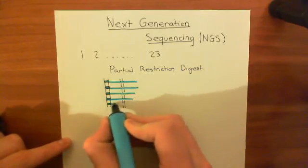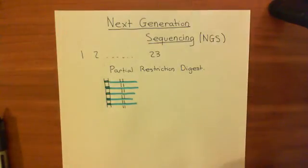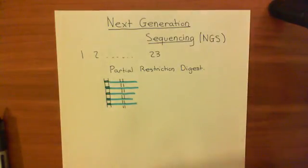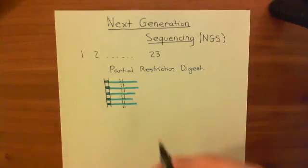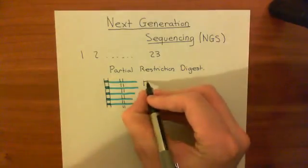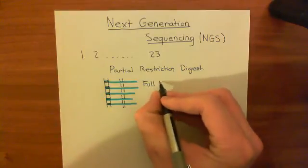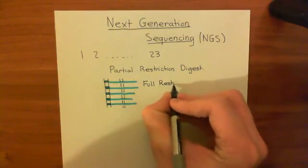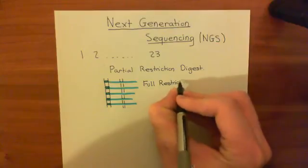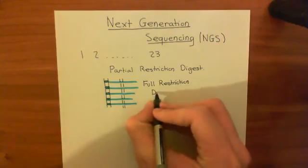If you were to put a very high concentration of restriction endonucleases onto chromosome 1, they would cut at every single one of these restriction sites. You'd get a fragment here, a fragment here, a fragment here — cutting at all the different sites. That is known as a full restriction digest, when you cut the chromosome at every single one of its restriction sites.